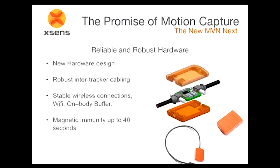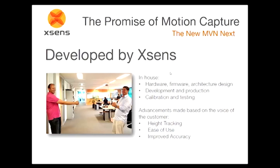One of the most important features that separates us from competition is magnetic immunity. When you calibrate our system, it remembers the good magnetic field from calibration. If you then run across steel structures or anything that would normally disrupt your magnetic field, we've solved this so you can walk across those interruptions and still get 100% clean data. This whole iteration of the suit was based on customer feedback: they wanted height tracking, easier setup under 10 minutes, and improved accuracy via higher sample rates.